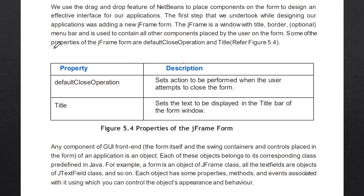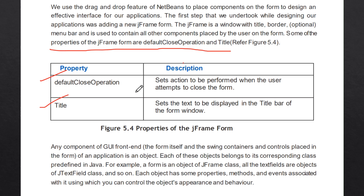We will study about the properties of JFrameForm as given in your book, according to your syllabus. The properties are defaultCloseOperation and title. What is the function of these properties? The title property controls what text will be displayed in the title bar of the form window.